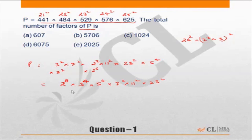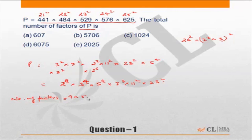How many factors will it have? Each of the powers is increased by 1 and then multiplied together. So the number of factors will be (8+1) × (4+1) × (4+1) × (2+1) × (2+1) × (2+1), giving us 9 × 5 × 5 × 3 × 3 × 3.